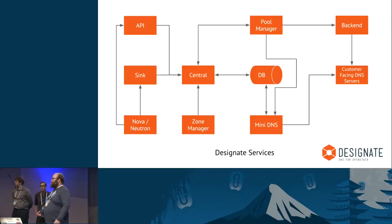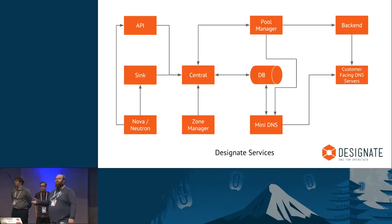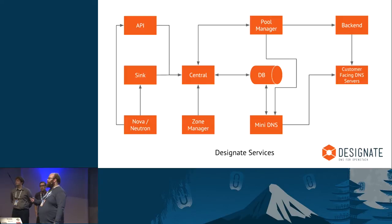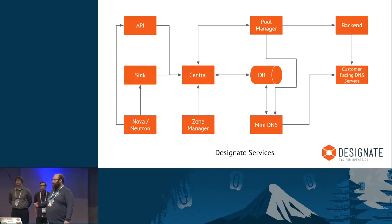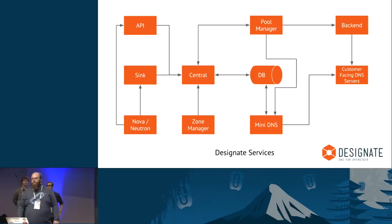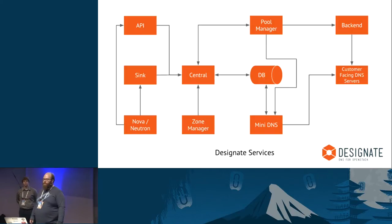Central then interacts with our Pool Manager service, which loads pluggable backends so you can decide which DNS server you're using. The backends are responsible for creating and deleting zones on the servers. Pool Manager then uses a service called Mini DNS — a very lightweight Python service that talks the DNS protocol — to push out DNS zone information to the servers your customers will use via a simple zone transfer. Nova and Neutron can also interact directly with our API or listen to events off the notification queue to create and delete records.